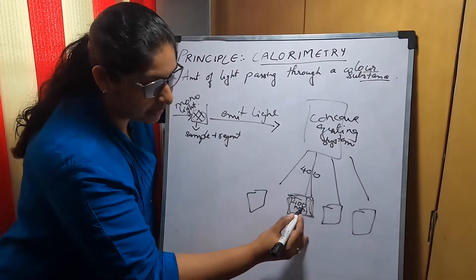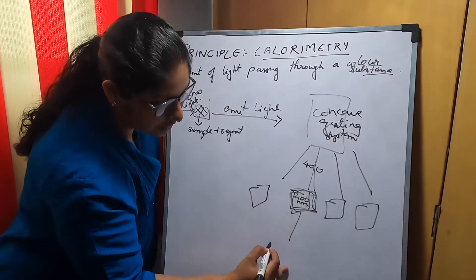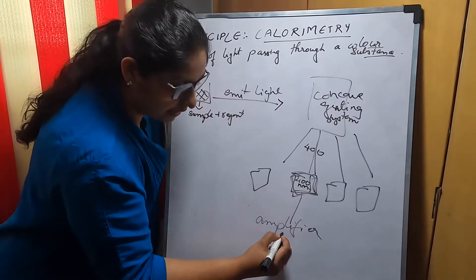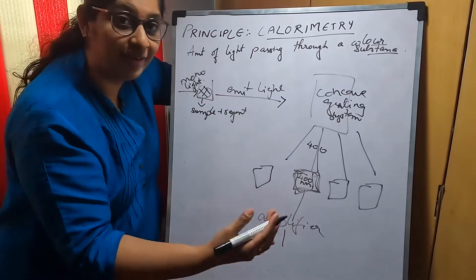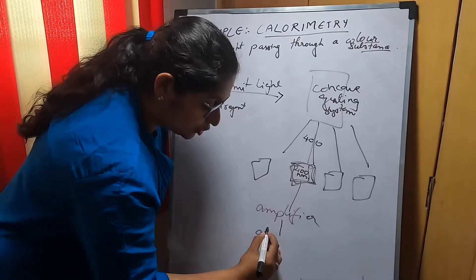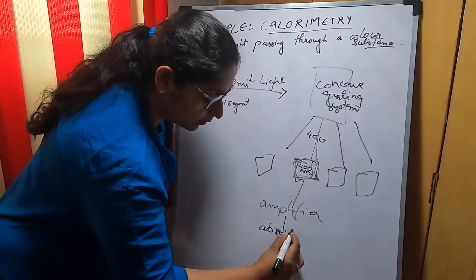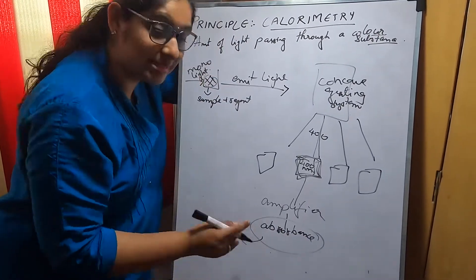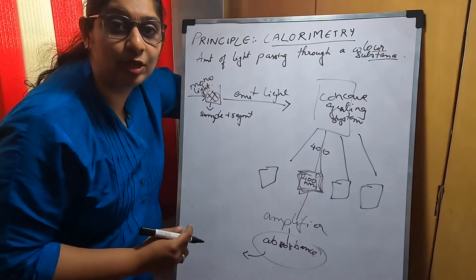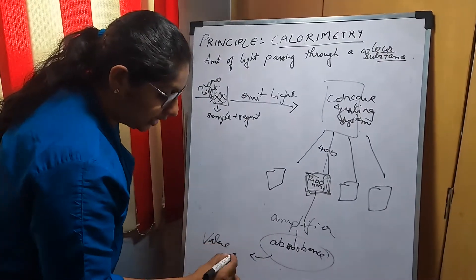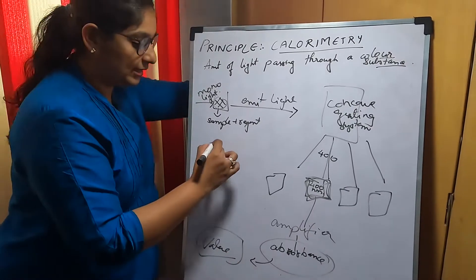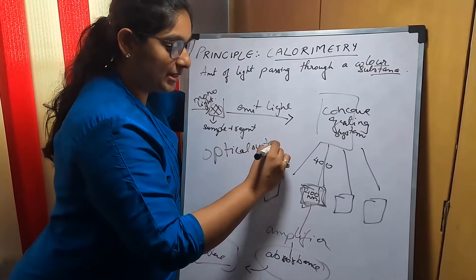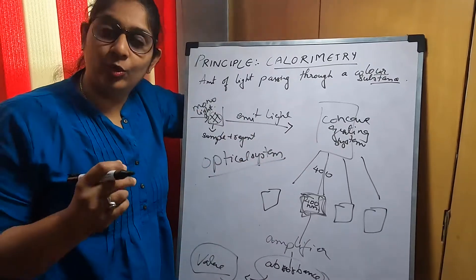From this detector, the light goes into an amplifier system. In the amplifier system, this light gets amplified and we get an absorbance value. This absorbance value goes through a series of algorithms and calculations and we obtain a value. This is how the optical system of a biochemistry analyzer works.